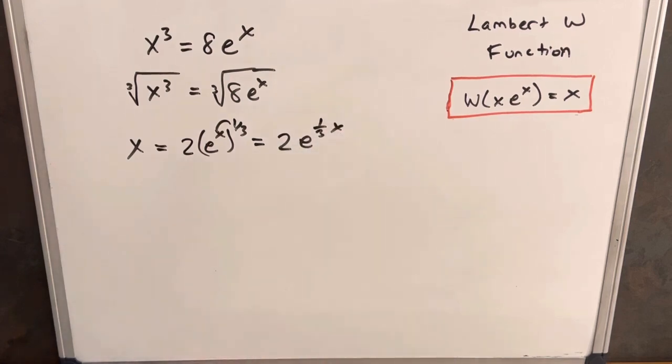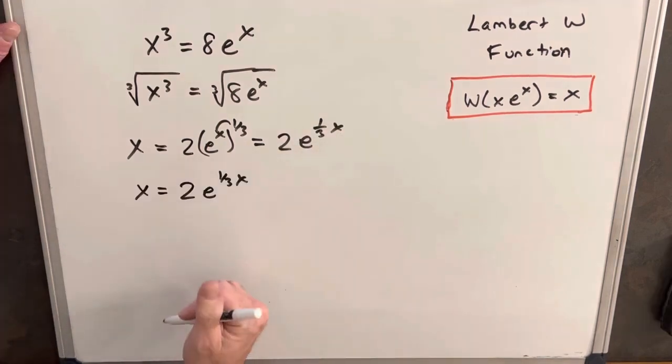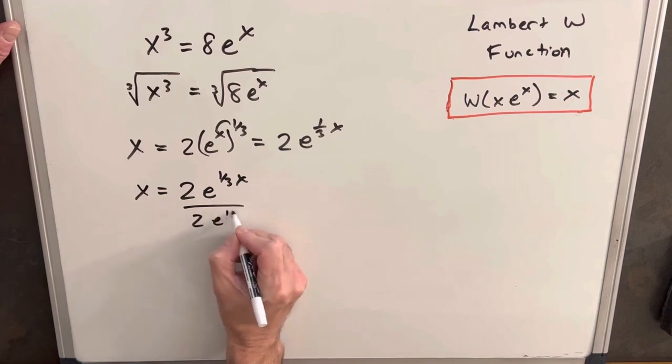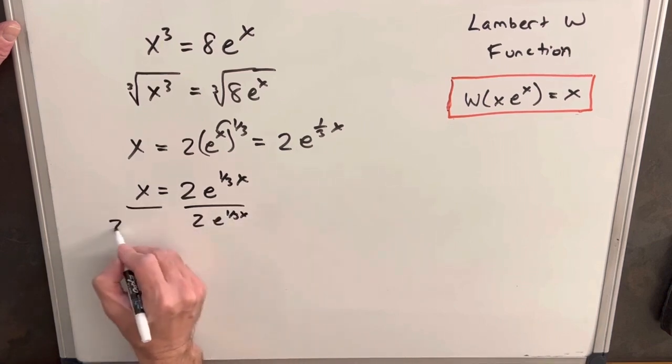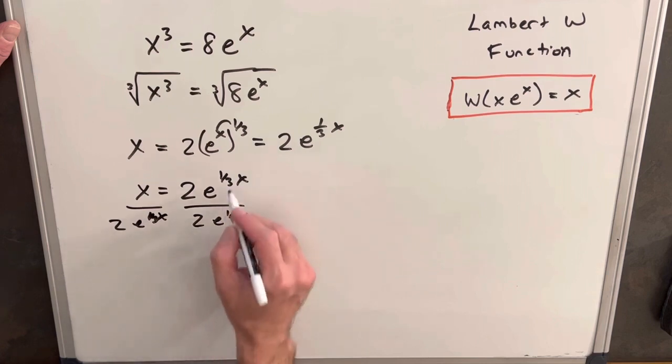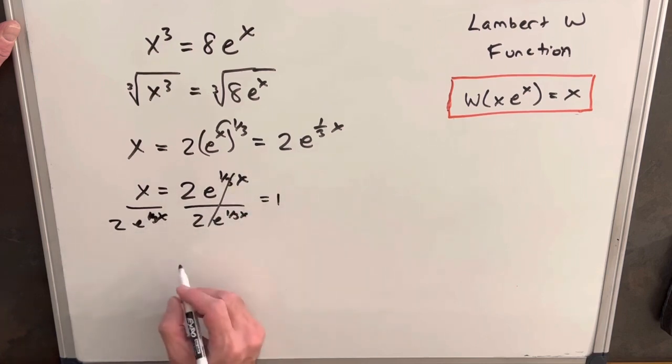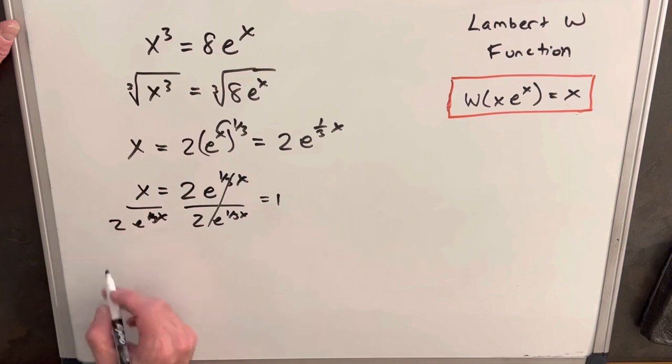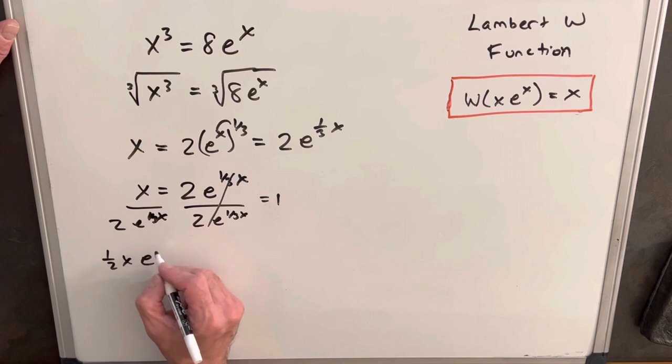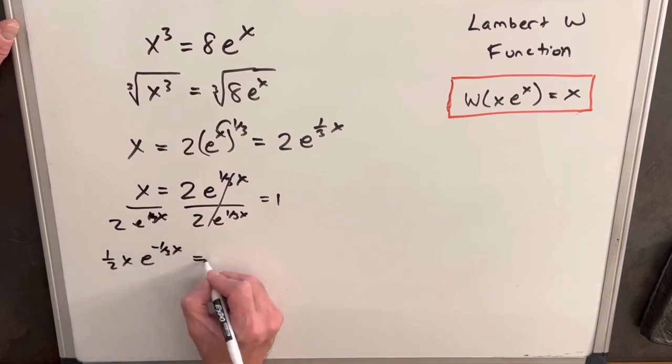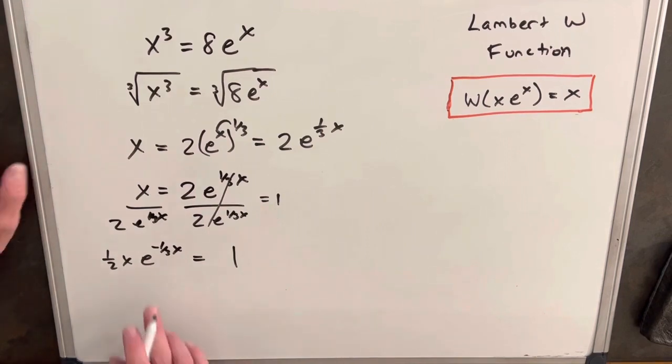Next, let's divide by the right side on both sides. This is going to cancel and be a one. Rewriting this, let's bring the 2 out as one-half, so we'll have (1/2)x e^(-1/3 x) = 1. You can see we're getting pretty close to this format.